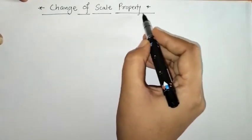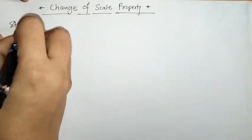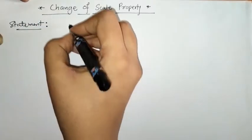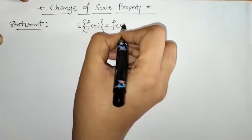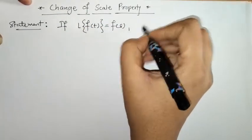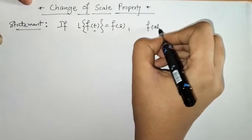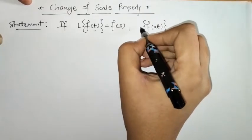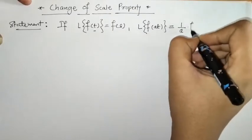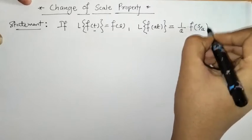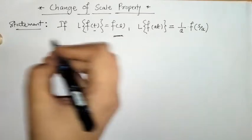Hello everyone, welcome to Unlock Maths. Today we are going to discuss the Change of Scale Property for Laplace transform. First, we will write down the statement of this property. If we have a function f(t) and we know its Laplace is F(s), then if we change the scale of the variable t to at, where a is a constant, and find its Laplace, it is given by (1/a) F(s/a).